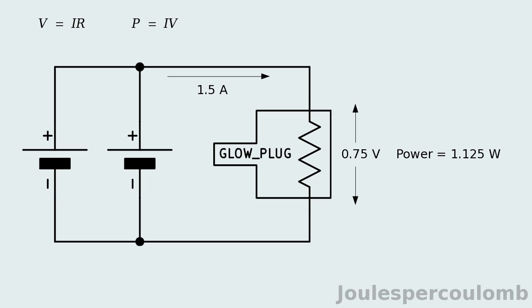The answer was three-quarters of a volt, and one and a half amps. Multiplying these gives the power output of the glow plug 1.125 watts.